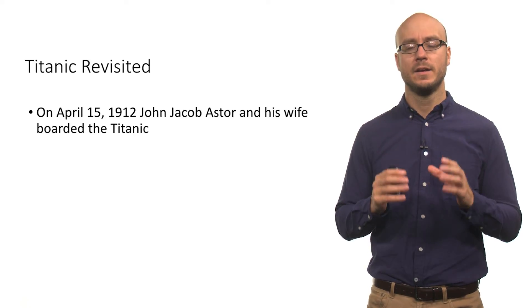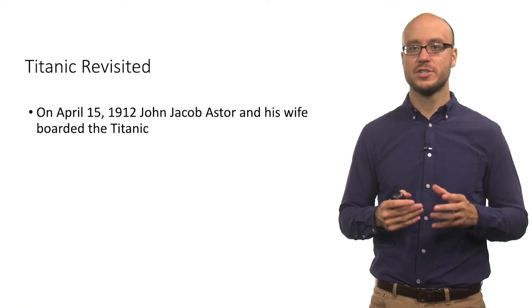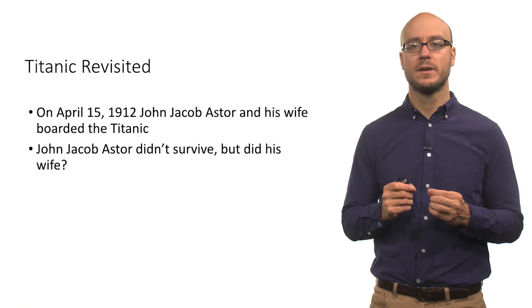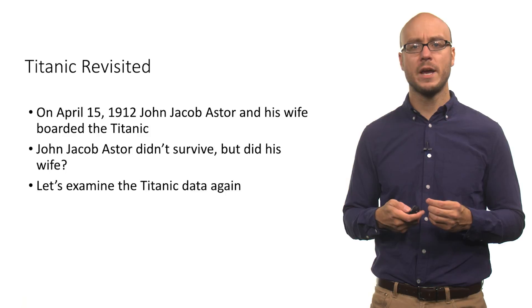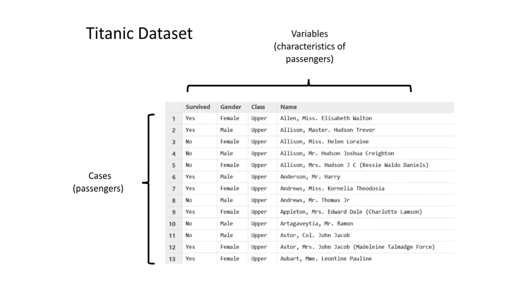Let's look at the Titanic data set again. As we talked about earlier, in 1912, the Harvard graduate John Jacob Astor and his wife boarded the Titanic. This is the data set where the rows are passengers — those are the cases — and the variables are the characteristics of the passengers: whether or not the passenger survived, their gender, their class, and their name.